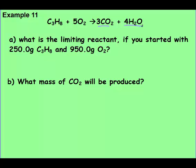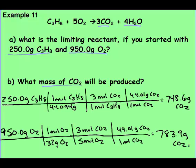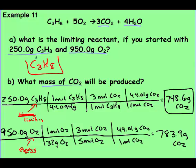Convert your 250 grams of propane to grams of CO₂, and then convert your grams of oxygen to grams of CO₂. The 250 grams of propane should have been converted to 748.6 grams of CO₂ — rounded to four significant figures because we started with four. And 950 grams of oxygen should have been converted to 783.9 grams of CO₂. Comparing those two, we box 748.6 for part B because 748.6 is smaller than 783.9. For part A, C₃H₈ is the limiting reactant — CO₂ is not a reactant, so C₃H₈ is the answer to A.